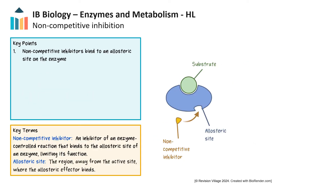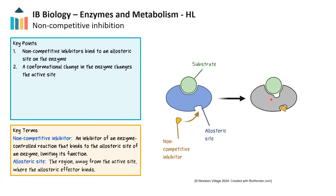Enzymes often have allosteric sites where specific molecules can bind to regulate their activity. When a molecule binds to an allosteric site, it induces a conformational change in the enzyme, altering the active site enough to prevent substrate binding and catalysis. This process, called noncompetitive inhibition, is usually reversible and enables cells to regulate enzyme activity dynamically. Noncompetitive inhibition plays an essential role in feedback mechanisms, allowing enzymes to respond to changes in cellular conditions.